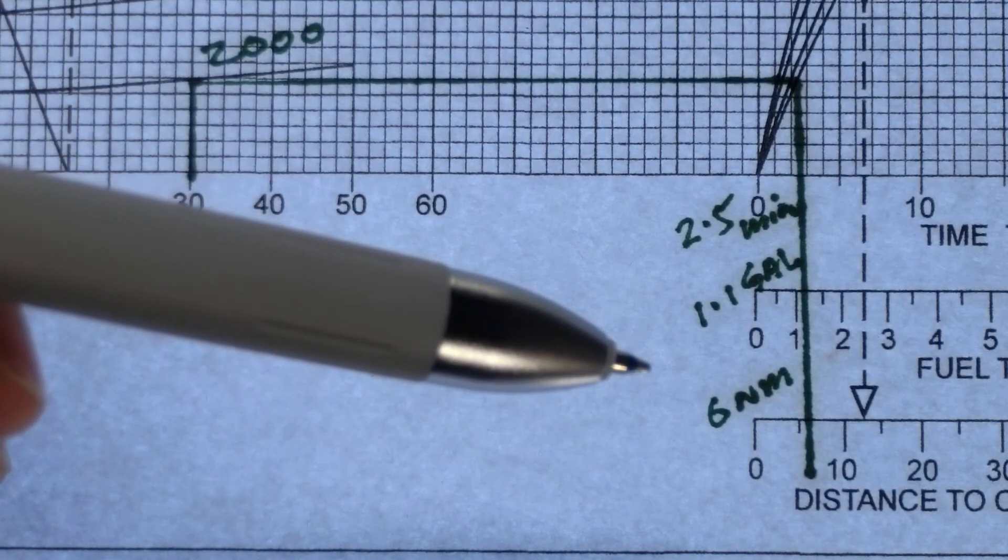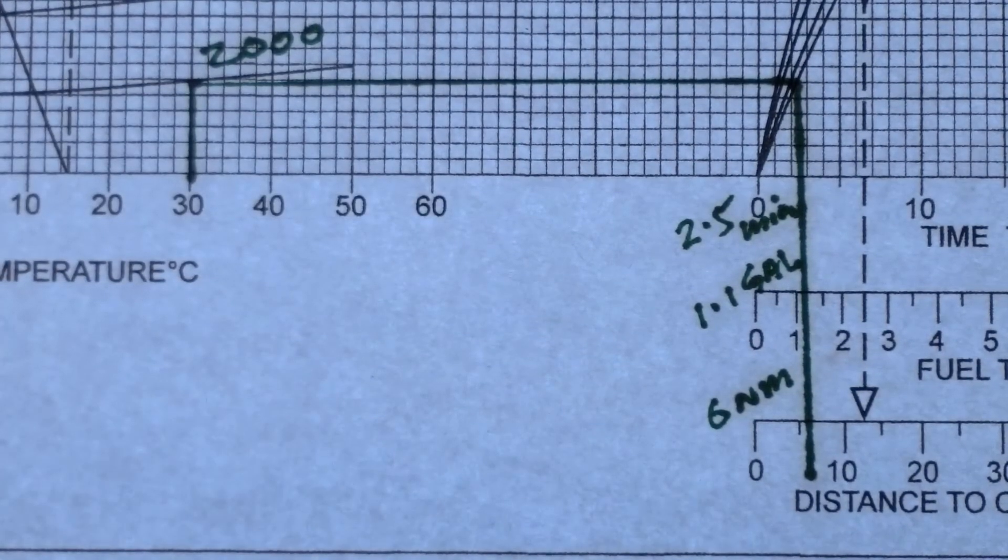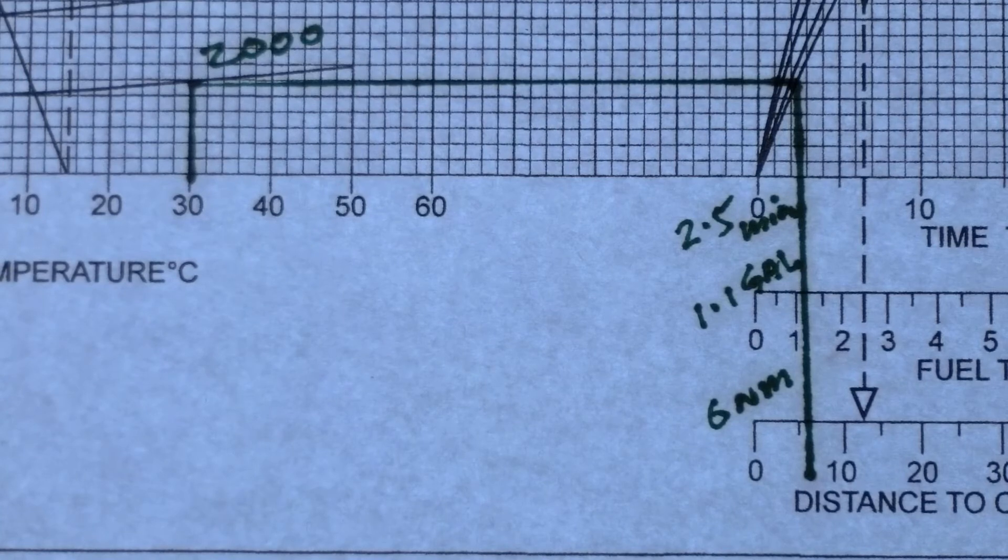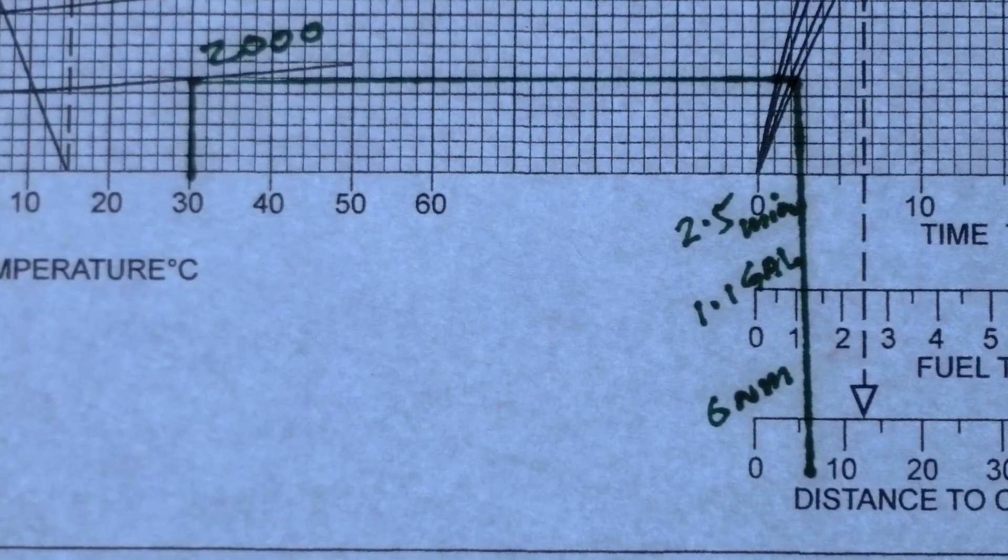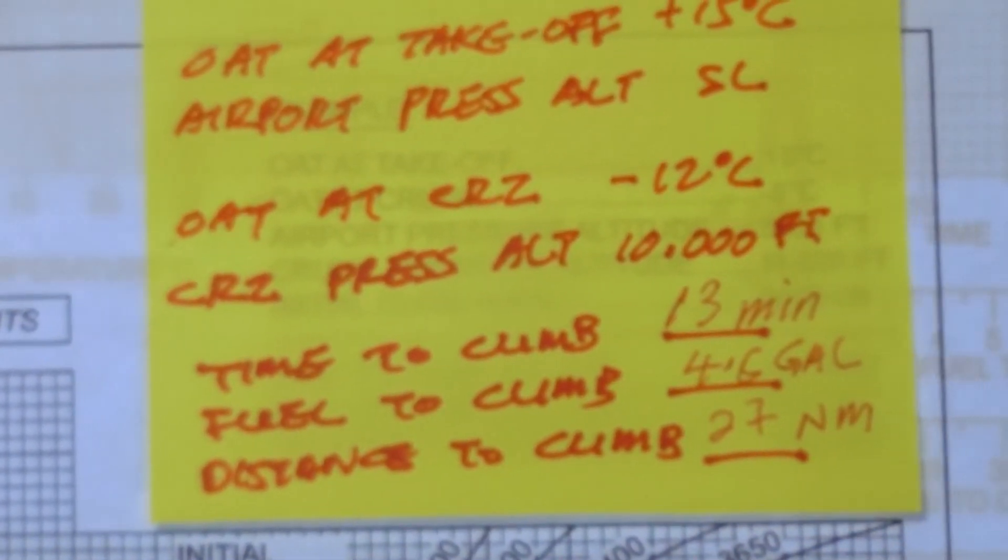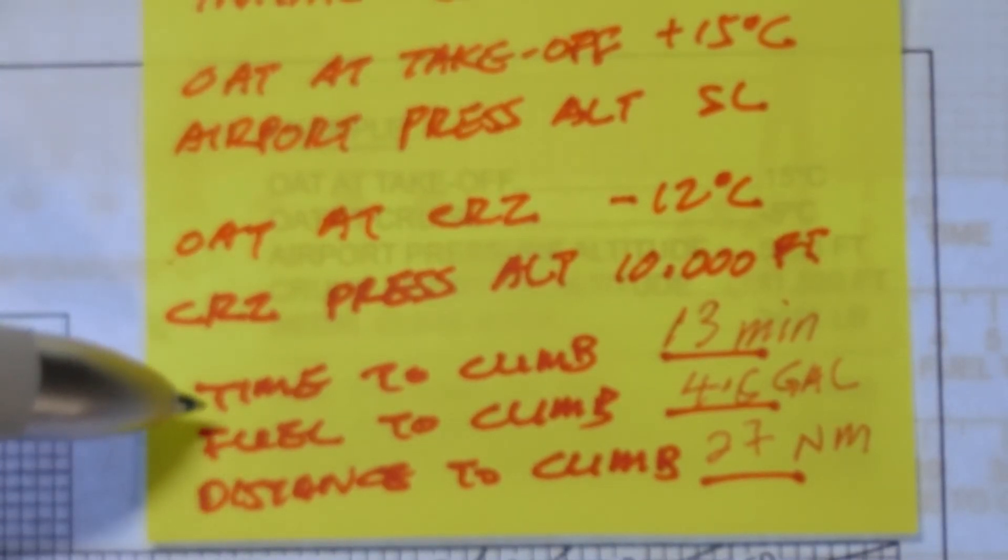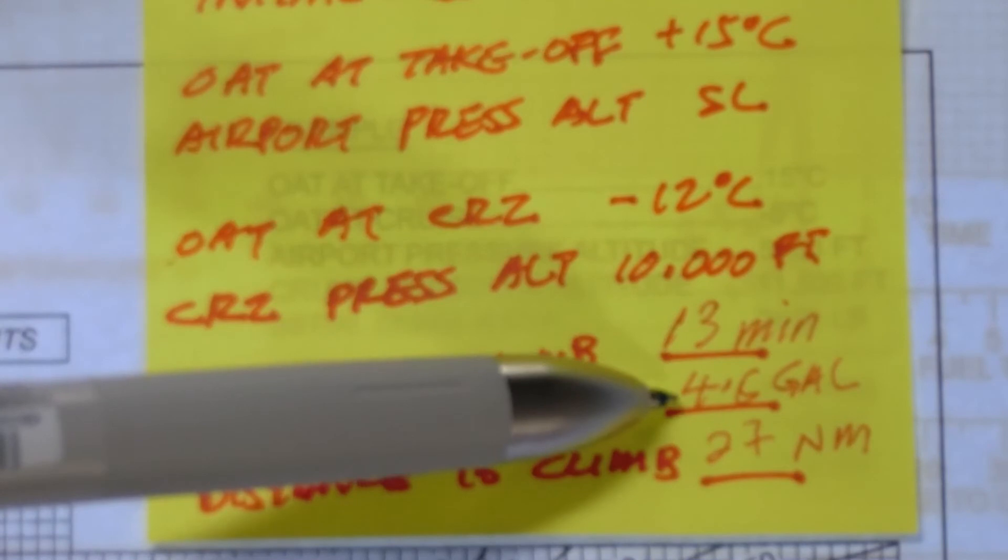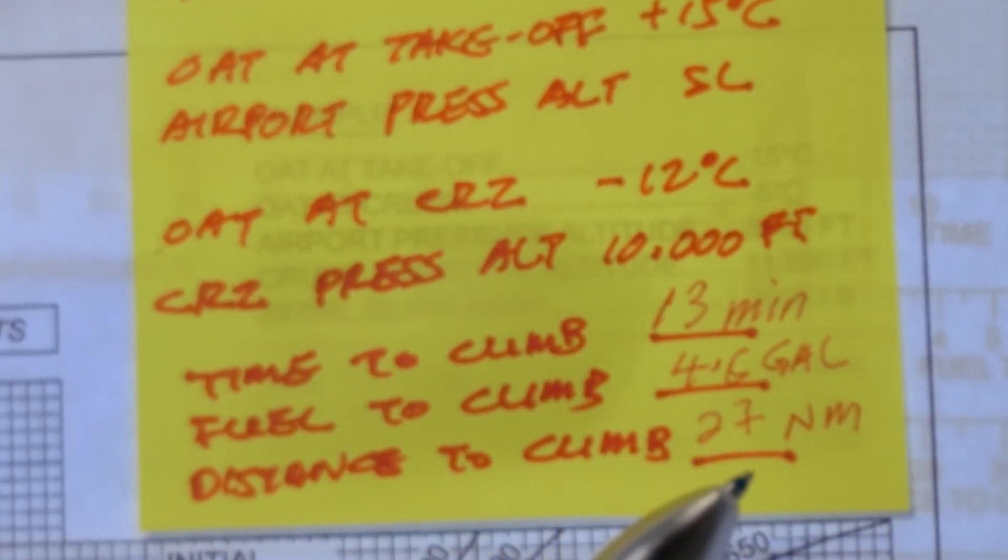Now if we were to compare this with our initial or our first example where we climbed from mean sea level to an altitude of 10,000 feet which happens to be the same target cruise altitude as this example. Well we saw there that the time to climb from sea level to 10,000 feet was 13 minutes and took 4.6 gallons of fuel and covered a distance of 27 nautical miles.